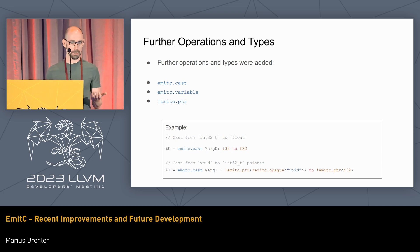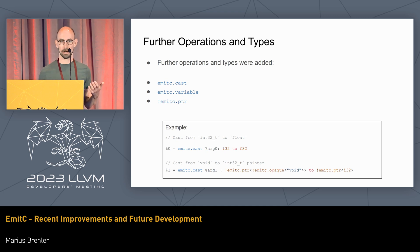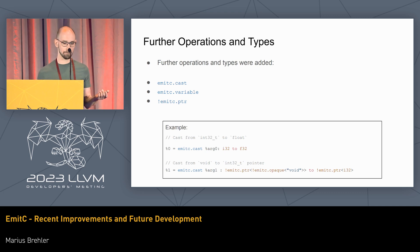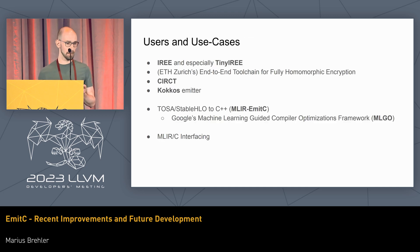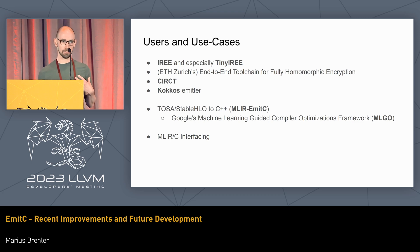We worked further on it and added types and further operations. We added a cast operation, an EmitC variable, and a pointer type. What you can essentially do, as shown in the example at the top, is cast an integer to float, or you can also cast a void pointer to an integer 32 pointer.